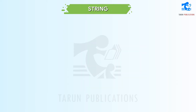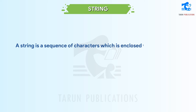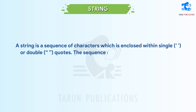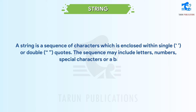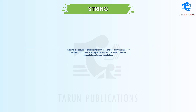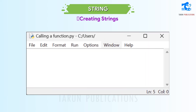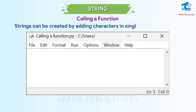String. A string is a sequence of characters which is enclosed within single or double quotes. The sequence may include letters, numbers, special characters, or a backslash. Creating Strings: strings can be created by adding characters in single or double quotes.